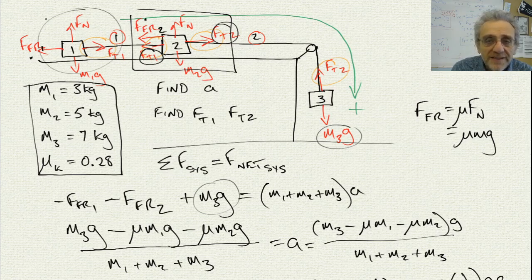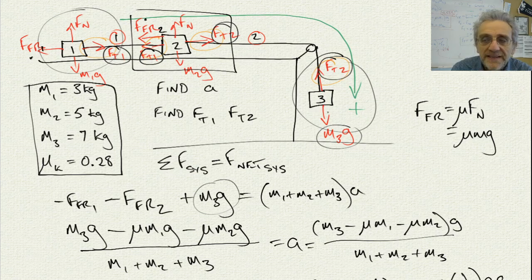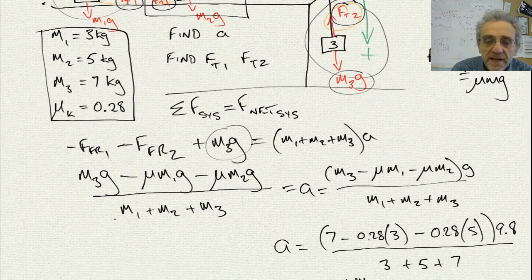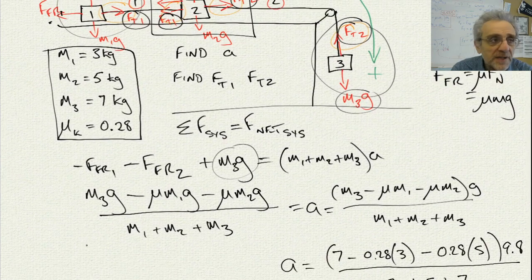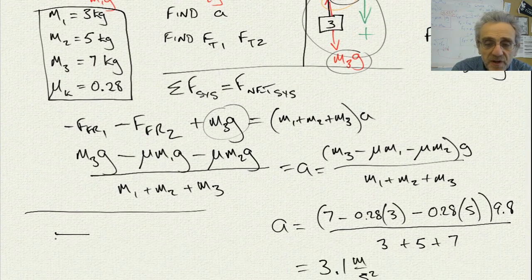Instead, if we choose mass number 1, the only tension is FT1 on that. That's solvable. And likewise, if we choose mass number 3, there's only one tension on that, and that's FT2. So therefore, I'm going to choose mass number 1 for FT1 and mass number 3 for FT2. And so, now, if you can kind of see it at the same time, I'm going to draw the free body diagram again for mass number 1.